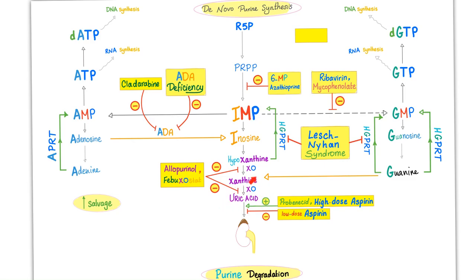Uric acid is the end result of purine degradation. Hypoxanthine is converted by xanthine oxidase to xanthine, and then the same xanthine oxidase gives you uric acid. Uric acid is excreted in the kidney. If excess uric acid accumulates in your blood, you will have hyperuricemia, which increases your risk of gout.